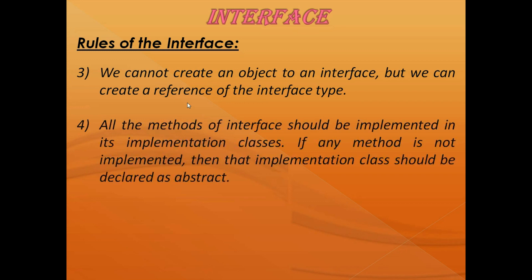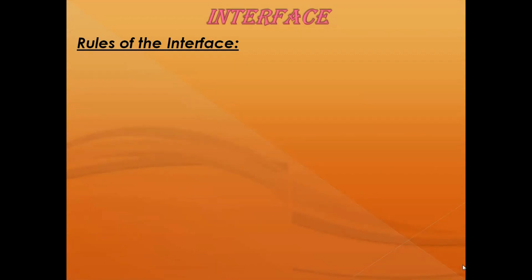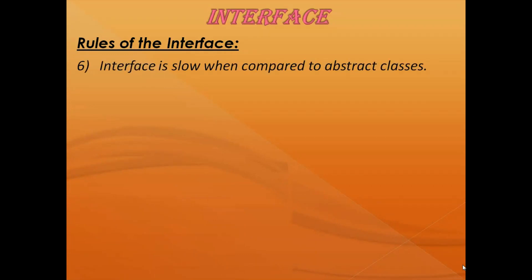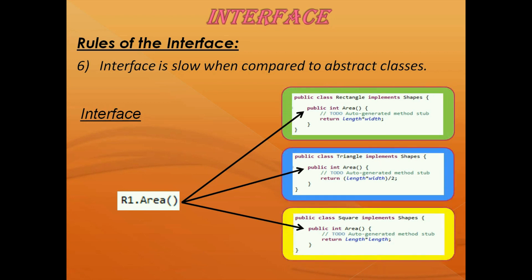All the methods of the interface should be implemented in its implementation class. If any method is not implemented, then that implementation class should be declared as abstract. We can use only constant variables inside an interface — no instance variables. Interface is slow when compared to abstract classes, because every time a method is called, JVM starts searching for that method in the implementation classes which are installed in different places in the system.